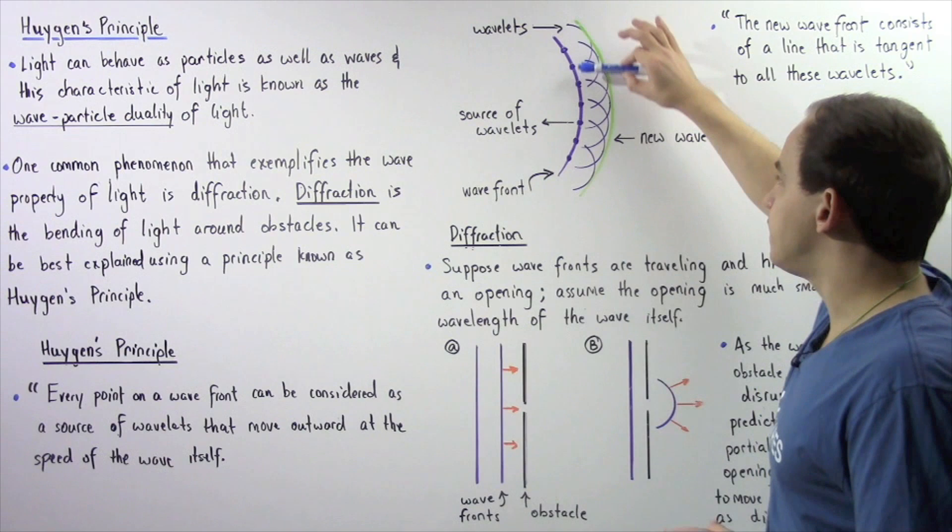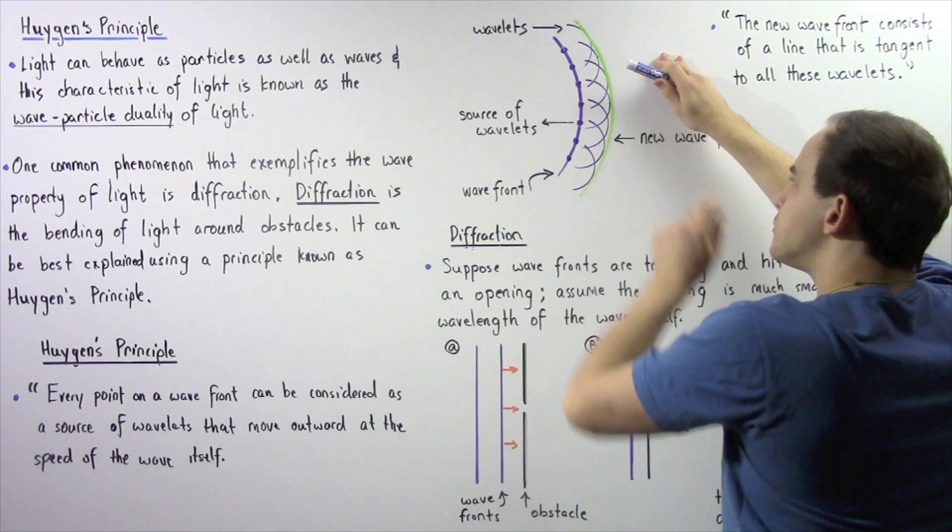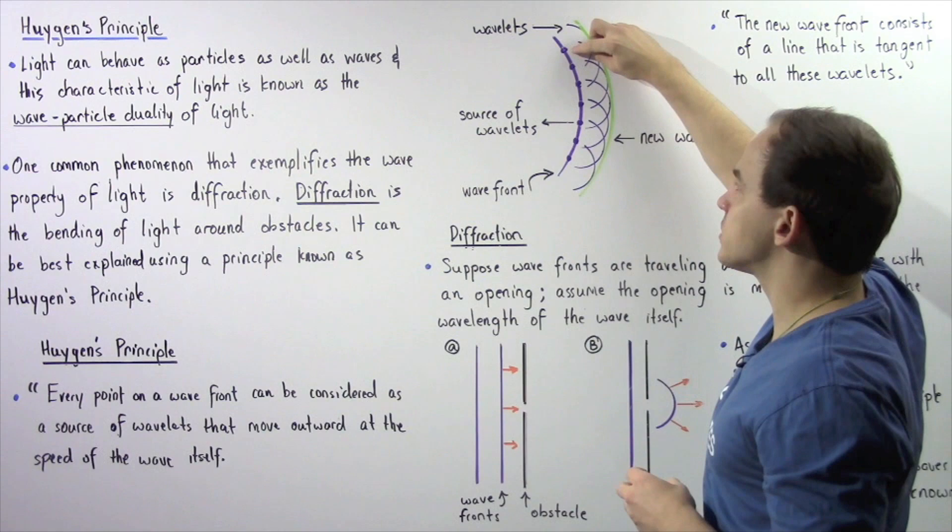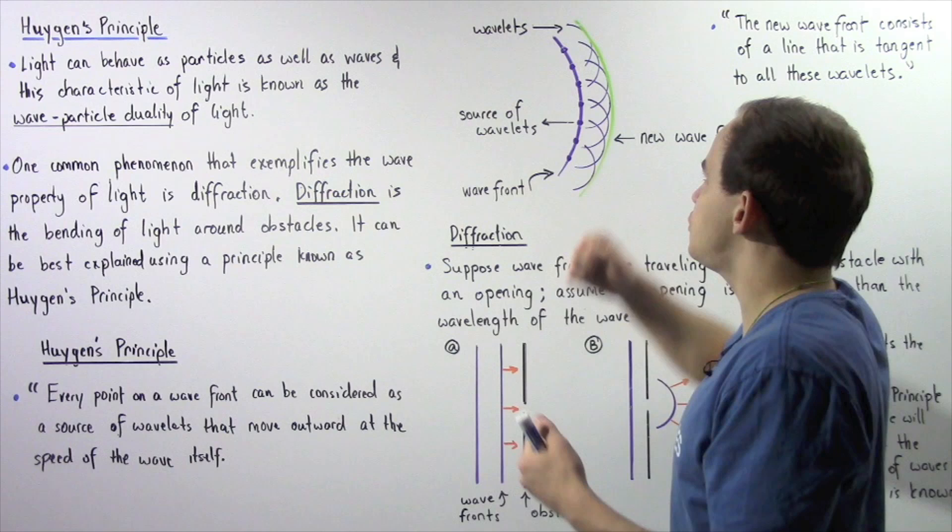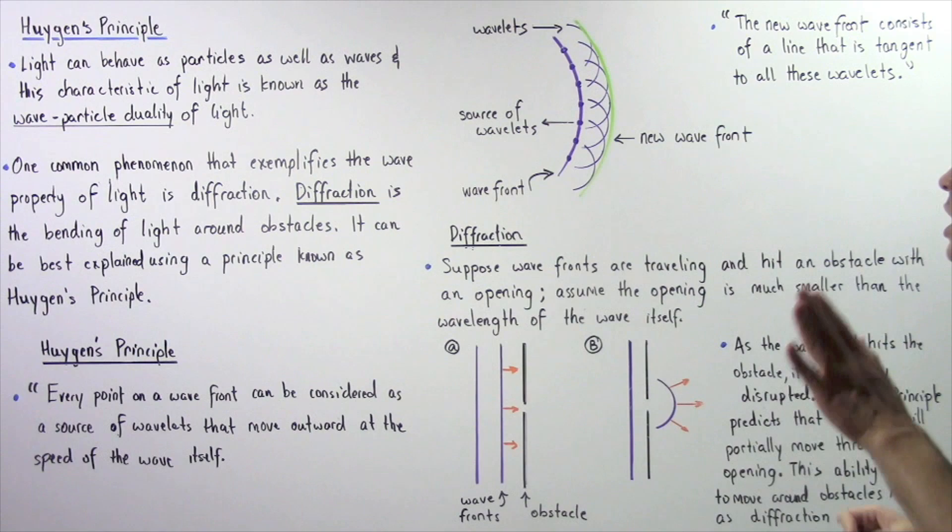Let's suppose we have the following single wave front as shown with the following purple line. Notice we show seven points and each one of these points is essentially a source of its own individual wavelet as shown by the following curved lines. For example, for this particular point on the wave front, this point acts as a source. It produces its own wavelet. Each one of these wavelets is shown. We have seven altogether to represent these seven points.